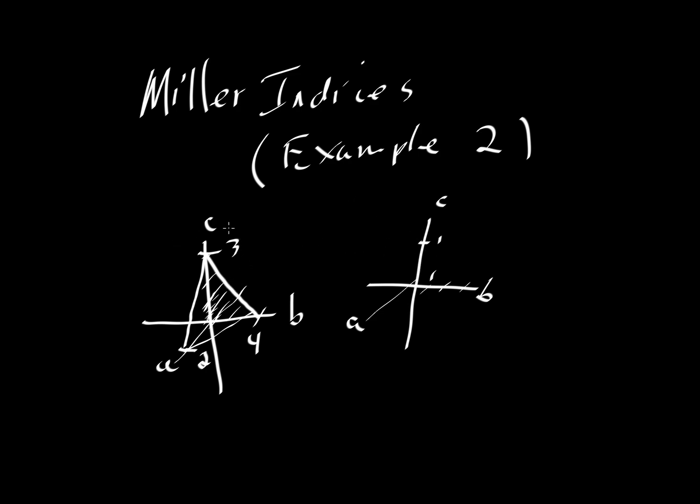So let's write this. Notice we have the intercepts 2A, 4B, and 3C. We'll erase the board and look at how the Miller indices turn out. So we had 2A, 4B, and 3C.